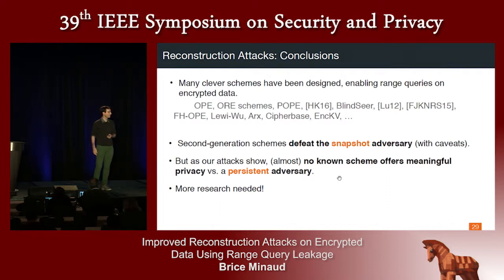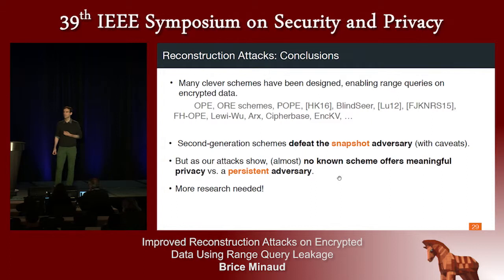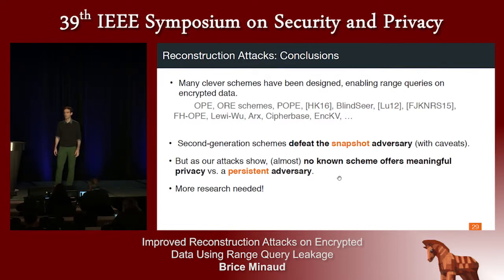Question: Would the same algorithms work if you have a distribution over the access pattern, or if your access patterns are noisy and you don't have perfect access pattern available? Answer: I think it depends on what type of noise we're considering. My intuition is that in a general, vague sense, it would make the algorithm much more expensive but the attack would still be possible — but it would really depend on the type of noise.